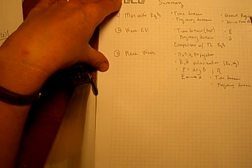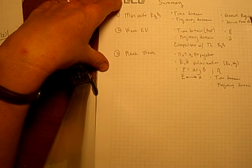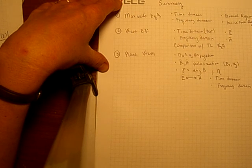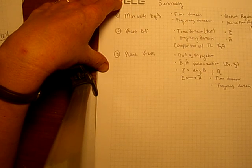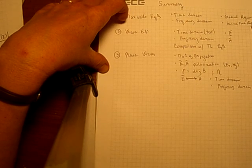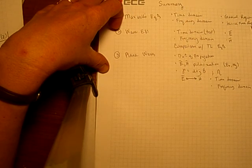A general region means that there may be sources such as conductivity, charge, and conduction current. Or we can derive the equations for a source-free region, such as air.